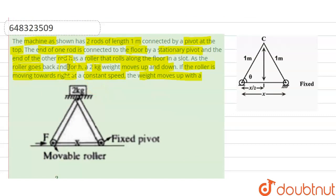We have a machine like this — here is a pivot and there are two rods, each of length one meter. One rod is fixed to the ground with a fixed pivot, and the other rod is connected with a pivot which is rolling on the floor. When this roller is moved back and forth, the 2 kg weight moves up and down. We have to determine: when the roller is moved towards the right, will the speed of this 2 kg mass increase or decrease? We have drawn a diagram for this.